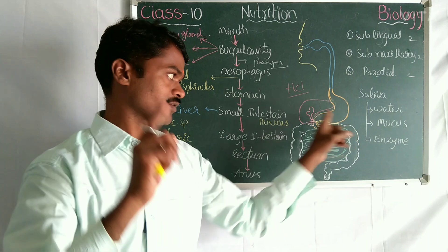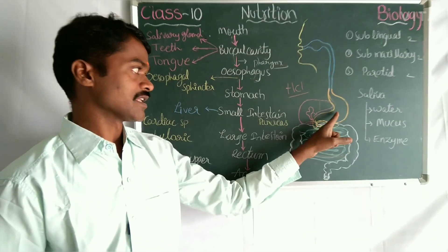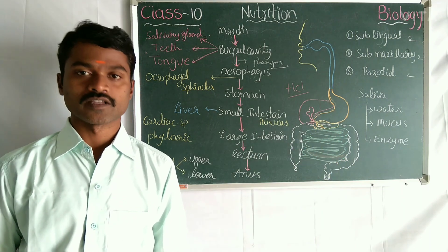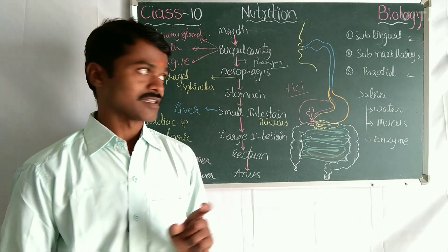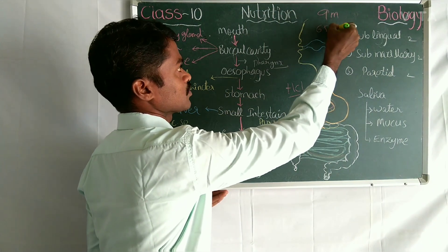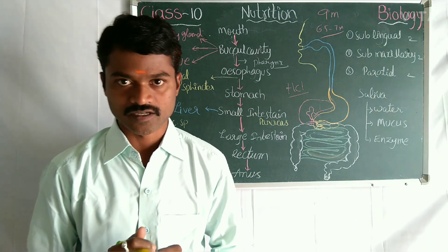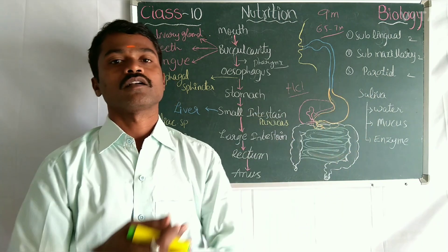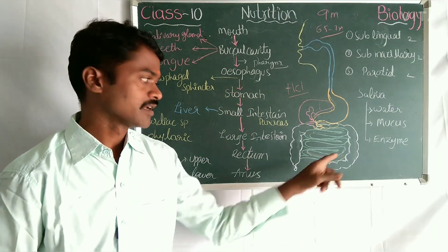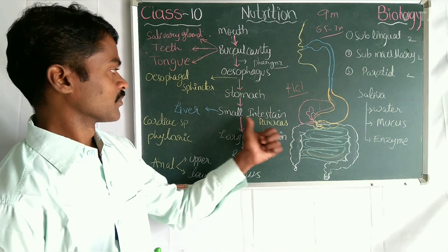Digestion of fats and proteins occurs in the stomach. Carbohydrate digestion occurs in the buccal cavity and then continues directly in the small intestine, because the acidic food turns slightly basic as it moves into the small intestine. The small intestine is the longest part of the digestive system — of the total 9 meters, 6.5 to 7 meters is the small intestine alone.